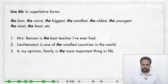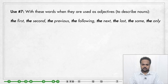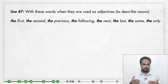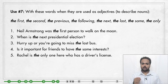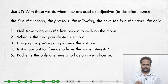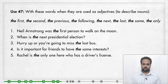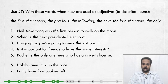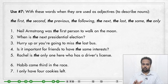Use number seven: use 'the' with words such as first, second, third, previous, next, etc., when they're used as adjectives — meaning when these words appear before a noun. For example: 'Neil Armstrong was the first person to walk on the moon,' 'When is the next presidential election?' 'Hurry up or you're going to miss the last bus,' 'Rachel is the only one here who has a driver's license.' But when these words are not adjectives — when they don't come before a noun — we normally don't use 'the.' For example: 'Habib came third in the race' and 'I only have four cookies left.'